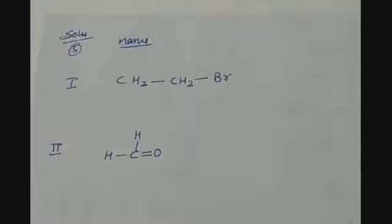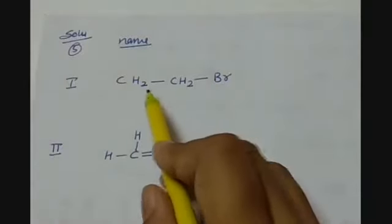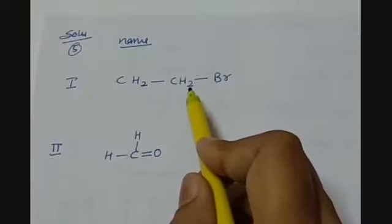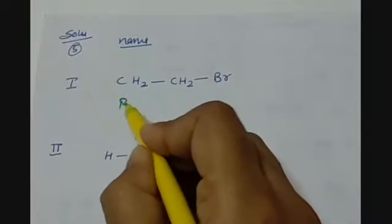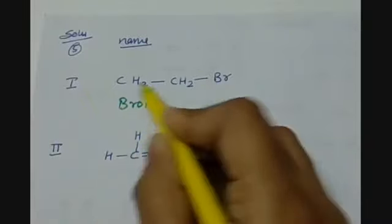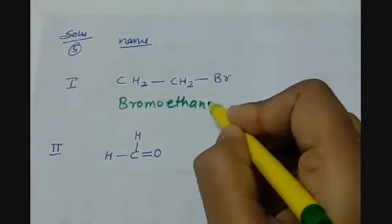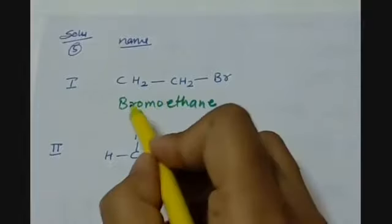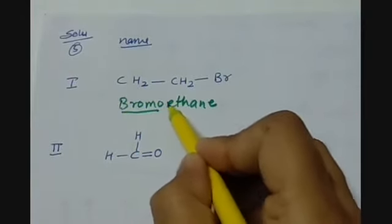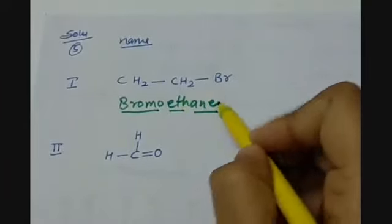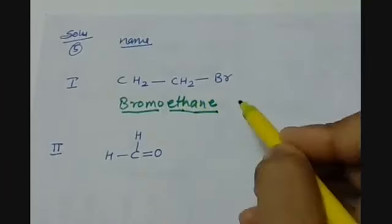The next question on the same page is name the following compounds. The first compound is CH3CH2Br. We have 2 carbon atoms and 1 bromine at the first carbon, so it will be bromo. Two carbons means the prefix ETH, and with single bonds it is an alkane — so the name is bromoethane, where bromo is the substitutional group, ETH is the parent chain, and alkane is the word root.